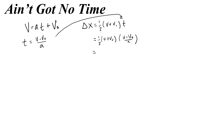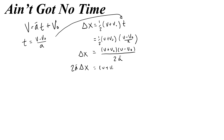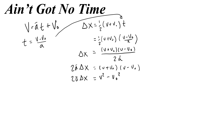That's not pretty, so let's clean it up. I write v plus v-naught and v minus v-naught as their own terms on top, and the one-half and a together on the bottom. Next I multiply both sides by 2 times the acceleration, giving me v plus v-naught times v minus v-naught. Foiling those gives v squared minus v·v-naught plus v·v-naught minus v-naught squared — the middle terms cancel, leaving 2a·delta x equals v squared minus v-naught squared.